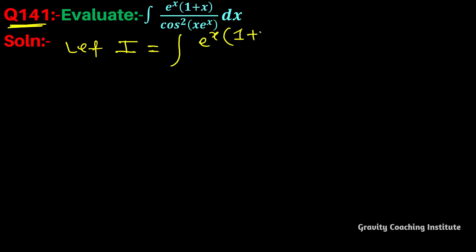We have to check who is differentiation to another part. So if we differentiate it, then we have to differentiate it. Putting x e to the power x equal to t.